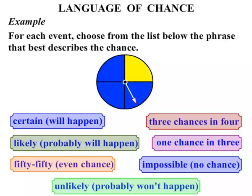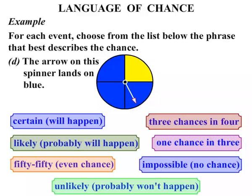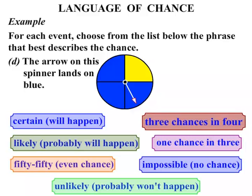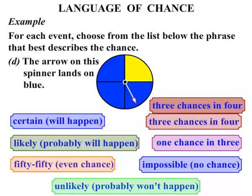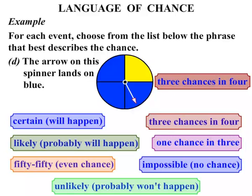Now another spinner, this time broken up into quarters — three of them are blue and one is yellow. So the chance that the arrow on this spinner lands on blue: well it has three chances in four, three quarters of a chance.